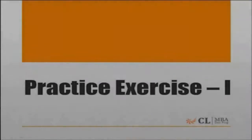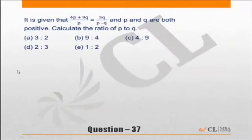Let's move to the first exercise. It is given that 4p plus 9q upon p equals 5q upon p minus q, and p and q are both positive. Calculate the ratio of p to q.